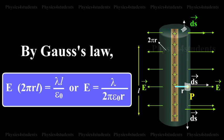By Gauss law, E into 2 pi rl equals lambda l by epsilon 0, or E equals lambda by 2 pi epsilon 0 r.